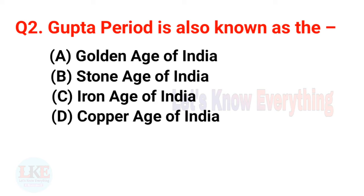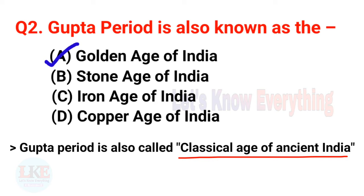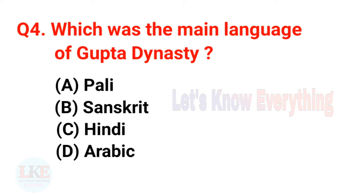Question 2: The Gupta period is also known as the Golden Age of India. It is also called the Classical Age of Ancient India. Question 3: The capital of the Gupta period was Pataliputra.